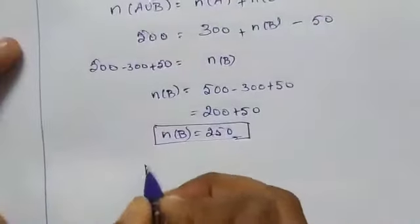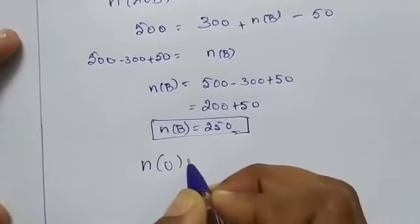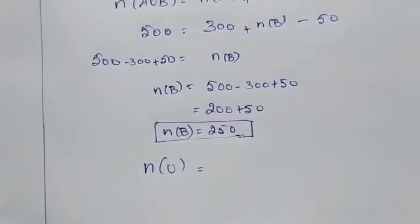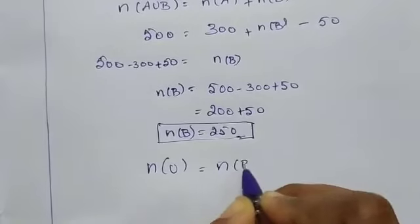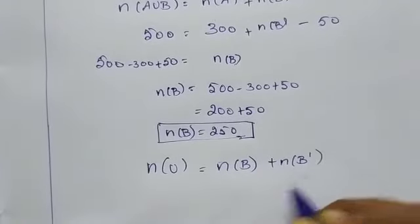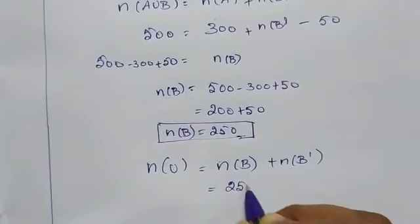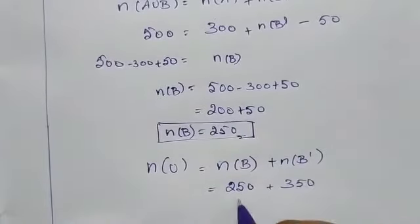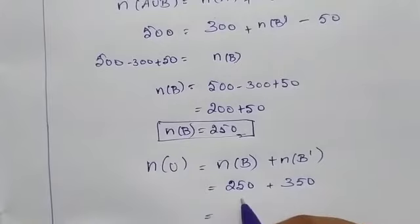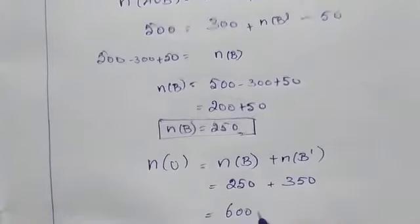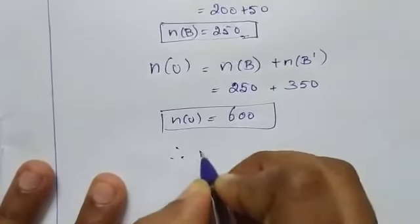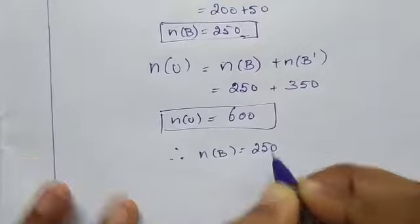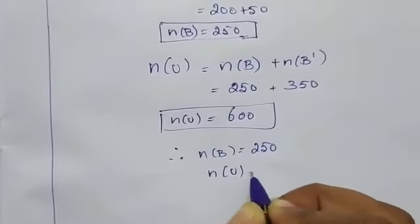Now find N of U. N of U equals N of B plus N of B dash. Here, B and B dash are given. N of B is 250, N of B dash is 350. Therefore, 250 plus 350 equals 600. N of B is equal to 250 and N of U is equal to 600.